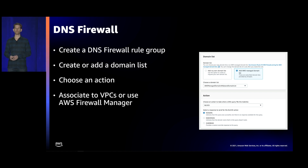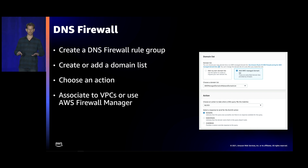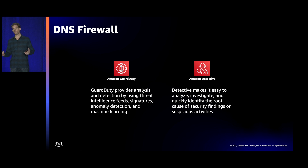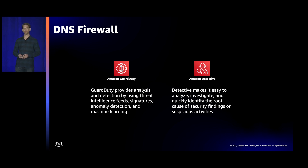At a high level, DNS Firewall provides rule groups where you add domains and specify an action to take on matching domains, then associate those rule groups with VPCs. You can use AWS Firewall Manager to manage them across many VPCs. Coupling DNS Firewall with Amazon GuardDuty or Amazon Detective lets you gain insights into suspicious activity and take action — for example, blocking domains associated with malicious sites identified by GuardDuty findings.